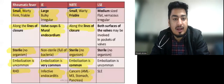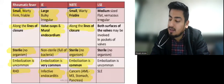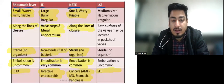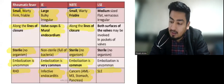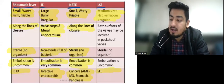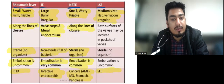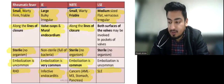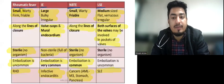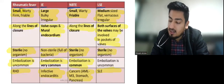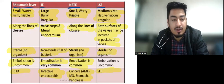Libman-Sacks endocarditis is seen in rheumatic diseases like SLE. The vegetations are medium-sized, flat, and irregular. They are present on both surfaces of the valve — this is a commonly asked question: which endocarditis affects both surfaces of the valve. Embolization is uncommon here.